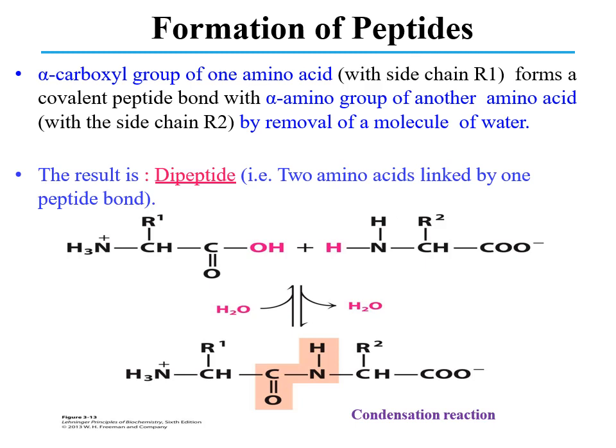The structure of amino acids contains two functional groups: the alpha-carboxyl group and the alpha-amino group. The peptide bond is formed between these two functional groups from different amino acids. The alpha-carboxyl group of one amino acid forms a covalent peptide bond with the alpha-amino group of another amino acid by the removal of a molecule of water. The resultant product is a dipeptide in which two amino acids are linked together by one peptide bond, as depicted in the figure below.